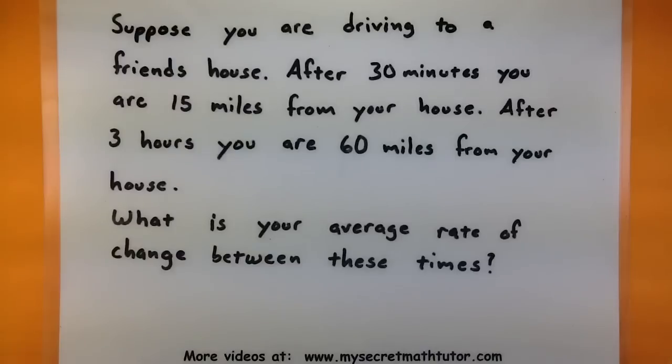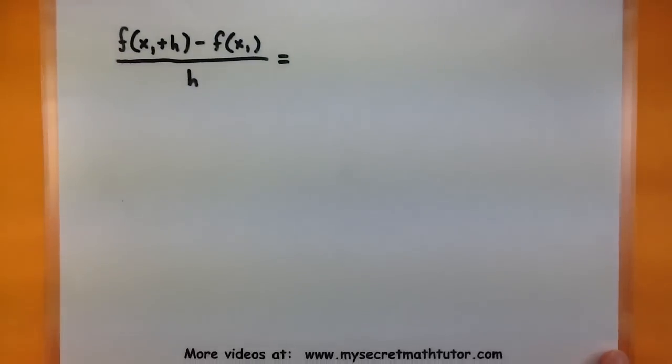In this problem, we'll be looking at the difference between our distances divided by our total change in time. This will help us evaluate our difference quotient, and we can interpret it as our average miles per hour between those two times.